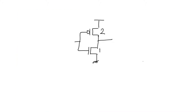To do this, we first have to make a definition: the unit inverter. The unit inverter is the CMOS inverter where the aspect ratio of the NMOS is 1 and the aspect ratio of the PMOS is 2. The unit inverter is the smallest inverter that we can fabricate whose T_P_high-low is equal to its T_P_low-high.